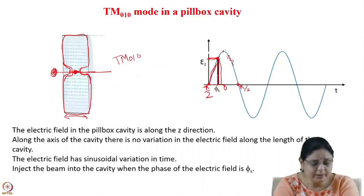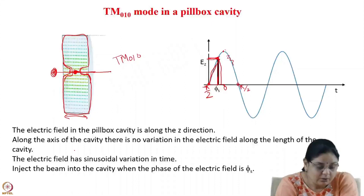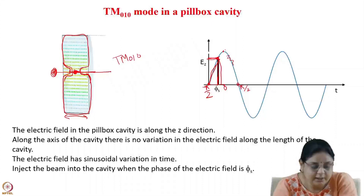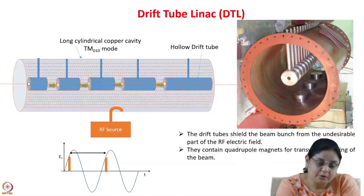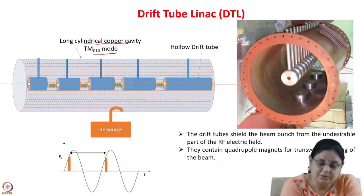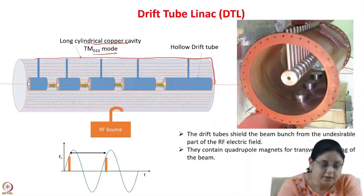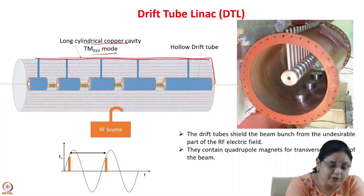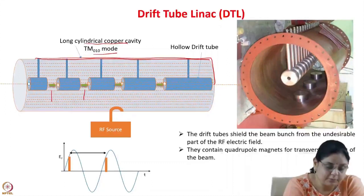The electric field in the pillbox cavity for TM010 mode is in the z direction and is constant along the z direction. Along the axis there is no variation in the electric field along the length of the cavity, and it has a sinusoidal variation in time. We inject the beam into the cavity when the phase of the electric field is phi_s. We can also have a long cylindrical copper cavity in the TM010 mode — instead of just a small pillbox cavity, we have a large cavity with drift tubes inside, adjusting the distance from one gap centre to the next as equal to beta lambda.